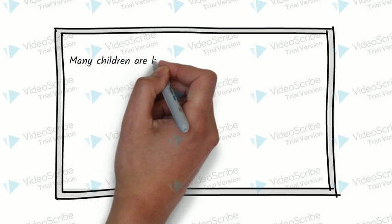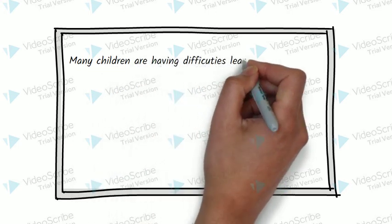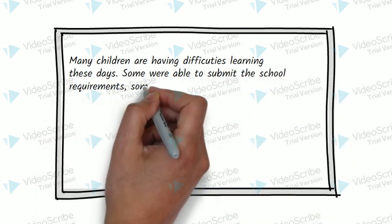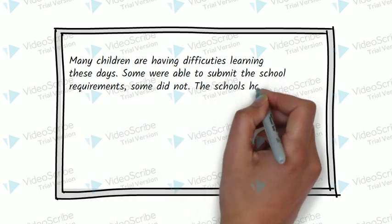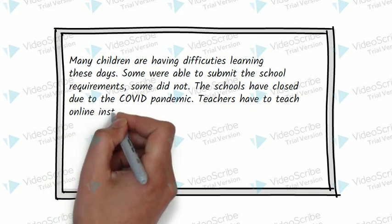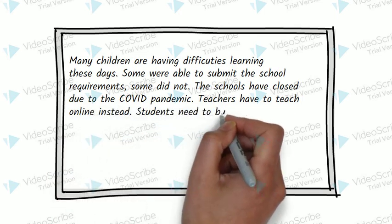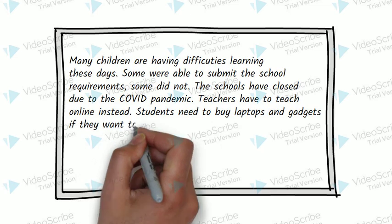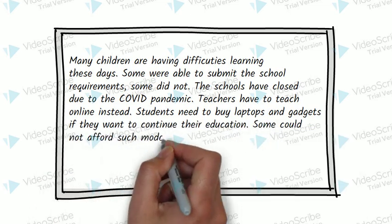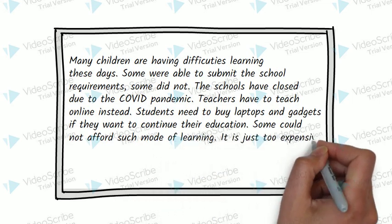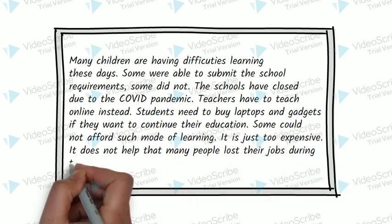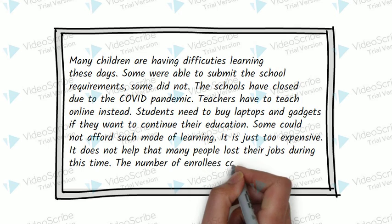Here's an example problem. Many children are having difficulties learning these days. Some were able to submit the school requirements, some did not. The schools have closed due to the COVID pandemic. And teachers have to teach online instead. Students need to buy laptops and gadgets if they want to continue their education. Some could not afford such mode of learning. It is just too expensive. It does not help that many people lost their jobs during this time. The number of enrollees continue to drop.